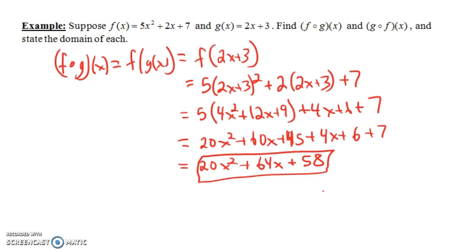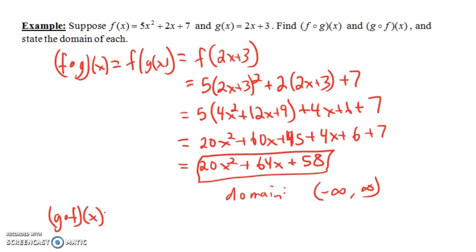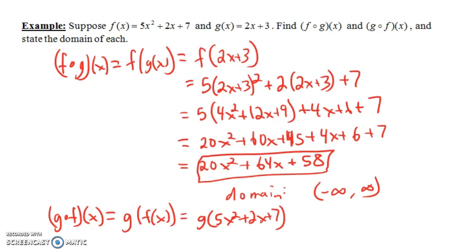Notice the domain of this function is all real numbers — there's no number that we can't plug in for x. So the domain is the interval from negative infinity to infinity. Now what if we compose in the reverse order? G circle f of x equals g of f of x, which is g of 5x squared plus 2x plus 7, since that's what f of x is.